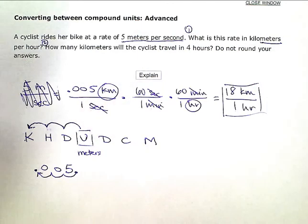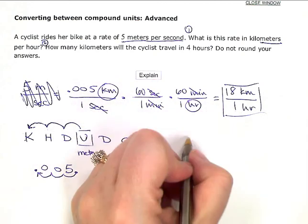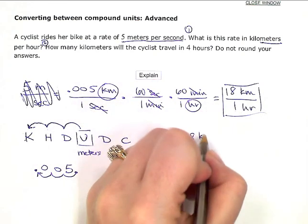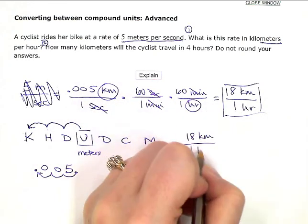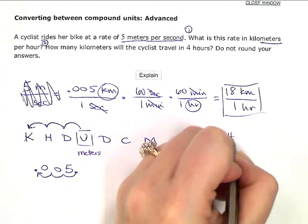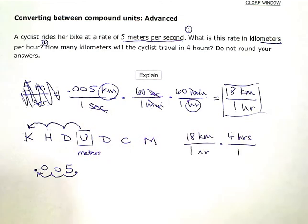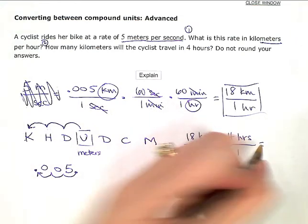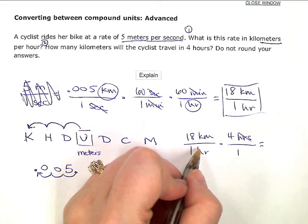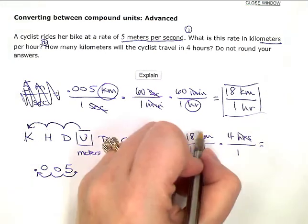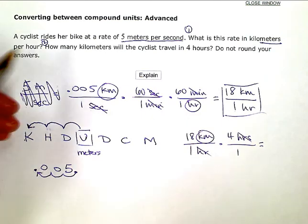Question number two, how many kilometers will the cyclist travel in four hours. So I'm going to take this rate, this 18 kilometers every one hour, and I'm multiplying it by four hours. And I'm going to put that over one just to keep my fractions lined up. Again, my hours cancels with hours, and all I'm left with is kilometers, which is what the question is asking me.